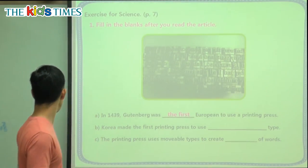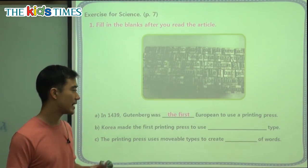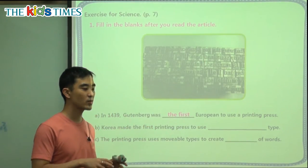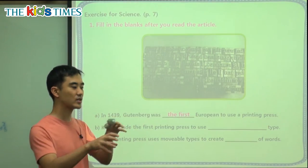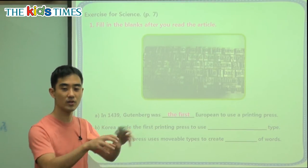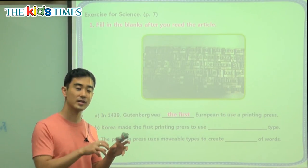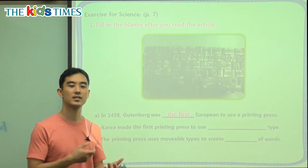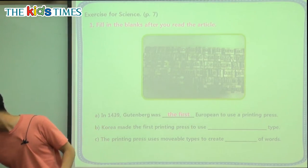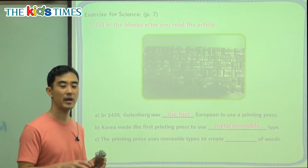Question B: Korea made the first printing press to use blank type. To use type means the letters. We want to be able to change the letters and make different words — add an A, take away an A, put a B, move it around. Because we use the same letters again for different words, it has to be something hard, not something that can break easily, something that will last a long time. So it is metal movable type.